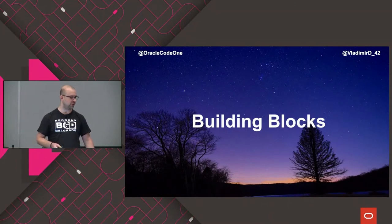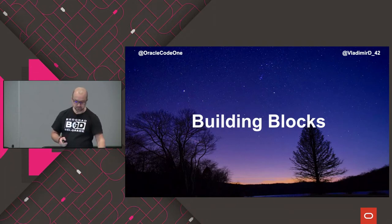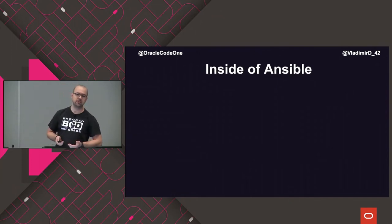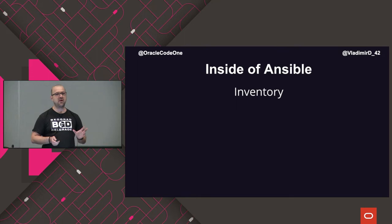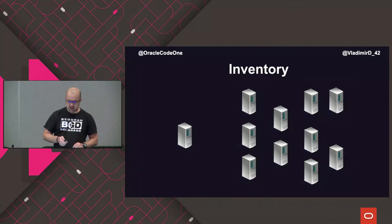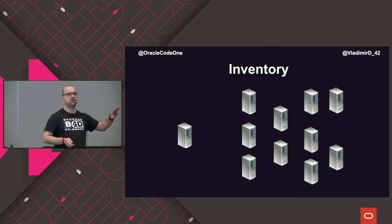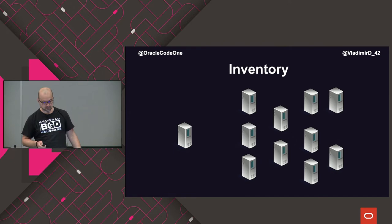We talked about why we should care about tools like Ansible, and looked at Ansible at a higher level. Now let's look at the building blocks that Ansible consists of. The first and most important part is the inventory. Inventory is basically a file where you tell Ansible: these are the machines I want you to work with. From Ansible's point of view, it doesn't care if it's a physical machine, a VM, a Docker image — it can work with anything. You need to provide an inventory file, and the only thing it cares about is that you do provide one.